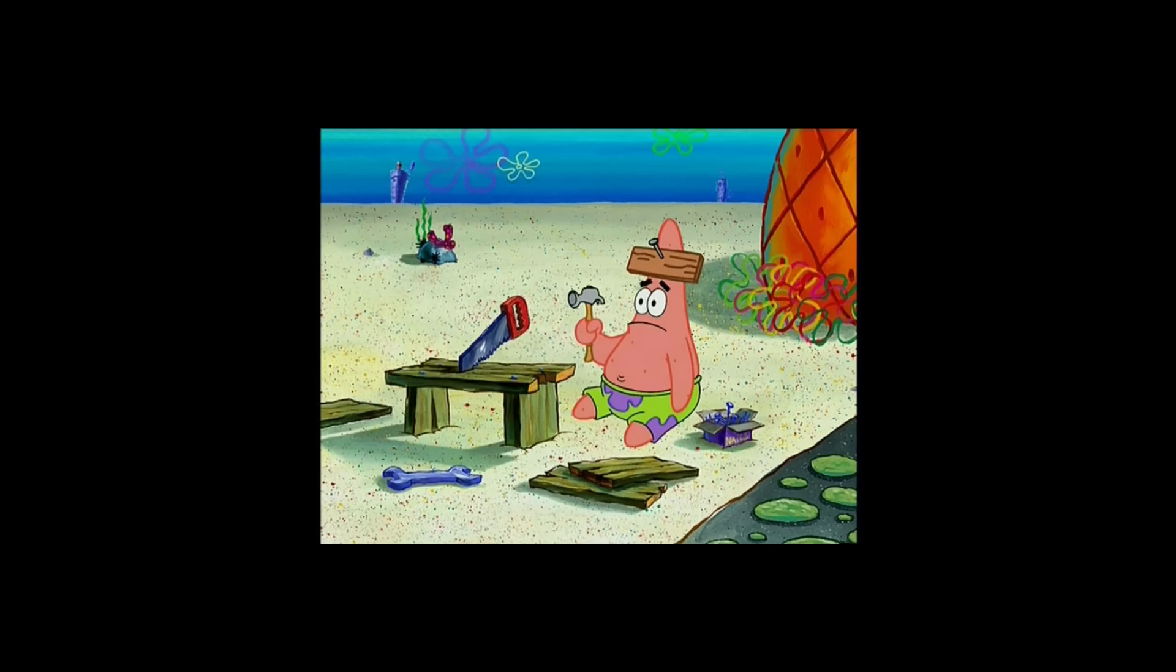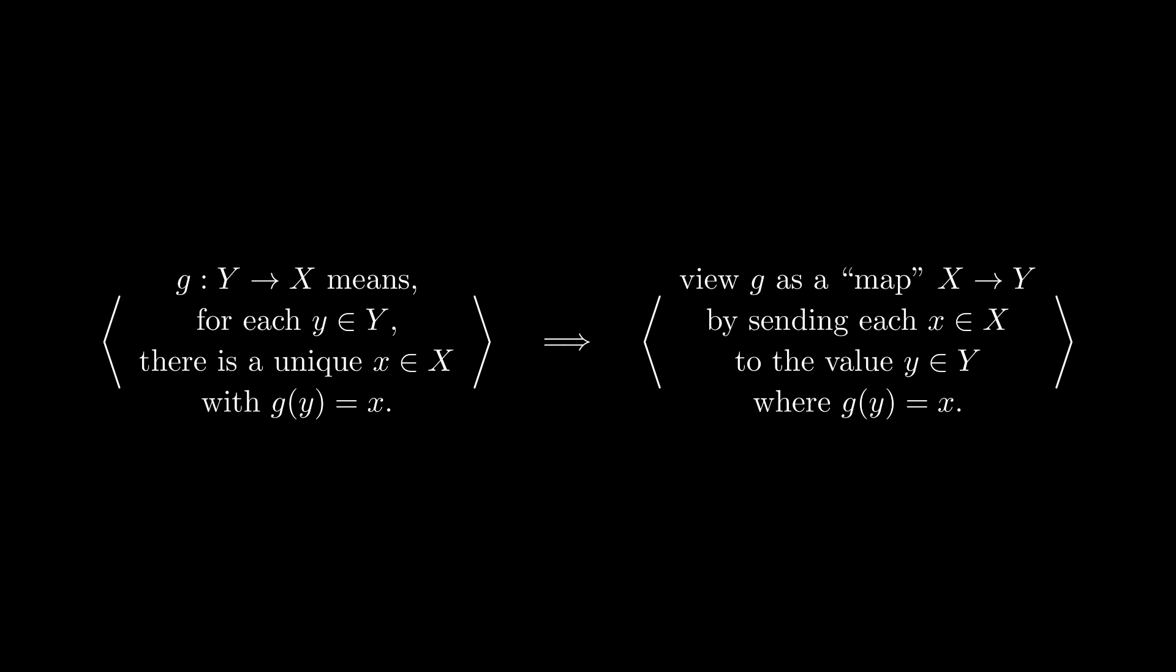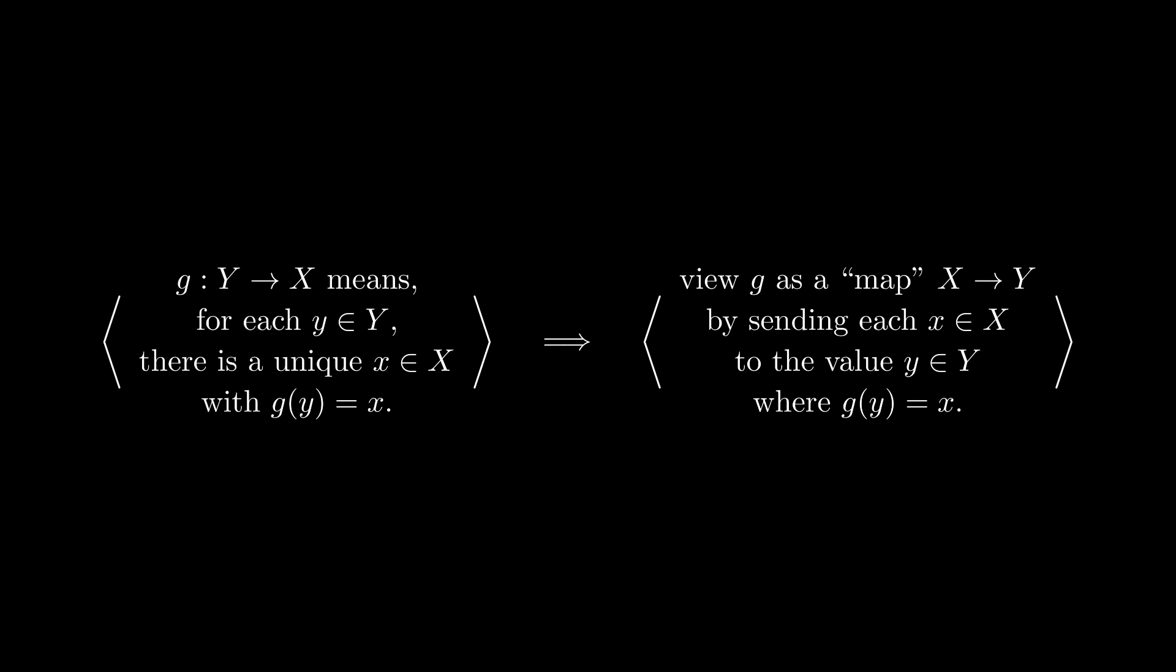Let's start with the wrong idea and try to correct it until we get something that works. If we have a function G from Y to X of sets, this means that G associates to every element Y a unique element X. If we want to somehow view G as a function in the opposite direction, then a natural first guess is to send an element X to the element Y where G of Y is equal to X. Of course, this only really works in defining a function if G is invertible.